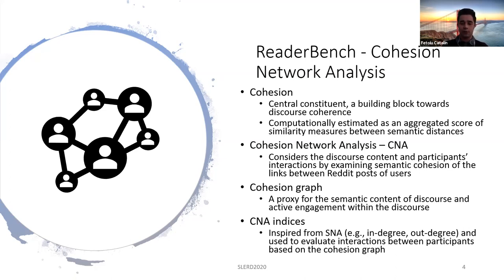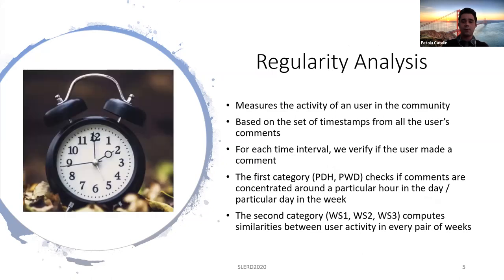The CNA indices are aggregations of cohesion scores for each user. One of the most important indices are in-degree and out-degree. For example, in-degree is the sum of all cohesion scores between all the comments of the user in relation to their parent comment.